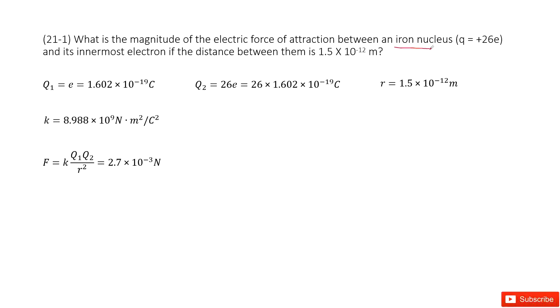The first charge is an iron nucleus. We circle it. This one tells you the charge is 26 elementary charges, so we call it q2 equals 26e.